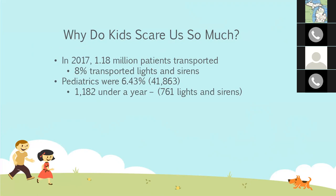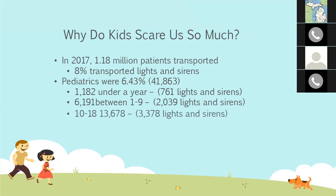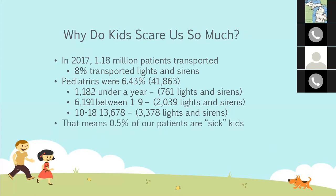As you go older in age, the percentage of lights and sirens goes down. We see 6,191 between ages 1 and 9, with about 2,000 transported lights and sirens — so you go from about 60% down to around 33%. In the 10-to-18-year-old group, that's 13,678 patients with 3,378 transported lights and sirens, holding right around a quarter. So we go from 60% to 30% to 25%. The real sticker is only about half a percent of patients we see in a year are quote-unquote sick kids being transported lights and sirens to the hospital.